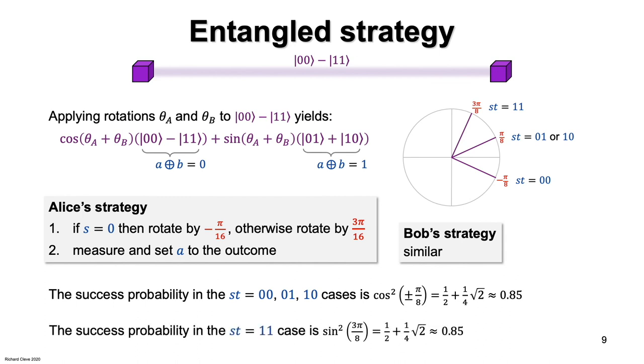The success probability in the 1, 1 case is the sine squared of 3 pi over 8, which is the same quantity.